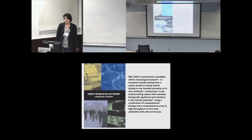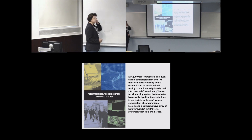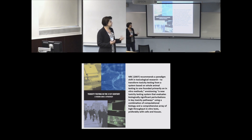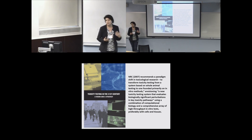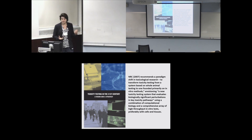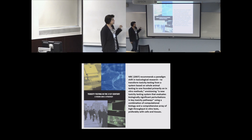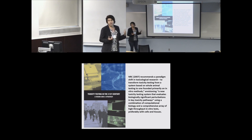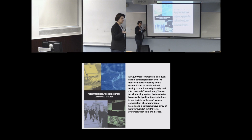In 2007, the National Research Council came up with a document suggesting that we were doing toxicology completely wrong — there has to be a paradigm shift. Basically, moving from systems based on whole animal testing to one founded primarily on in vitro methods, wanting a new toxicity testing system that evaluates biologically significant perturbations and key toxicity pathways using computational biology and comprehensive high-throughput in vitro tests with cells and tissues. This was necessary because of the scope of the problem — we have thousands of chemicals and thousands of species.